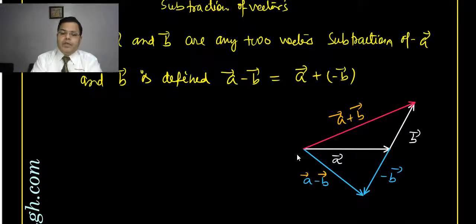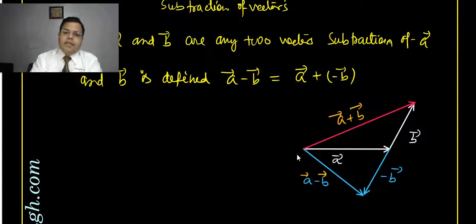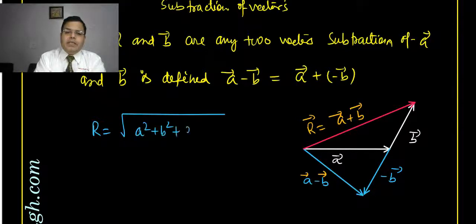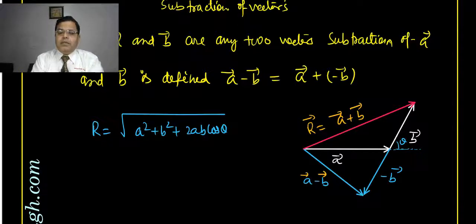The resultant of A minus B can be obtained the same way using the formula. The magnitude of A plus B and A minus B will be almost the same magnitude. We had learned earlier that the resultant R of A plus B is defined as: magnitude of R equals under root of A squared plus B squared plus 2AB cosθ, where θ is the angle between A and B.